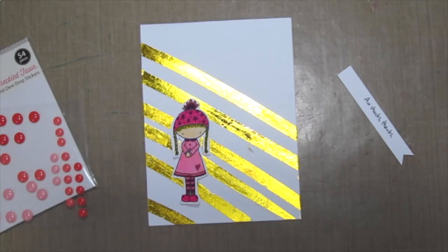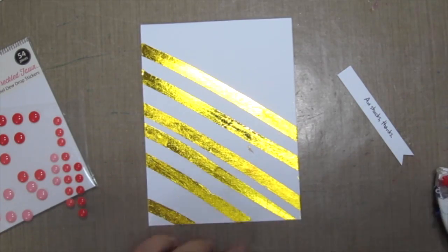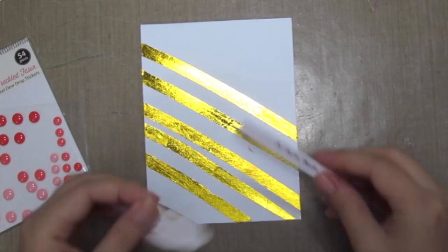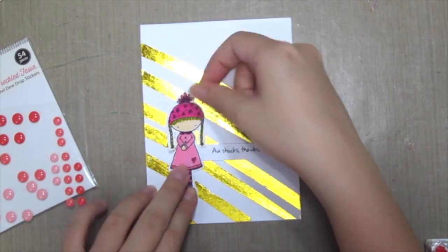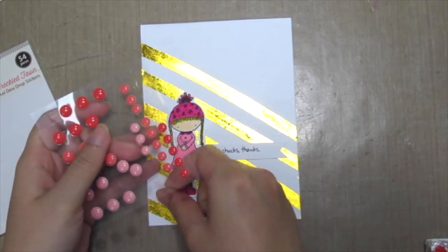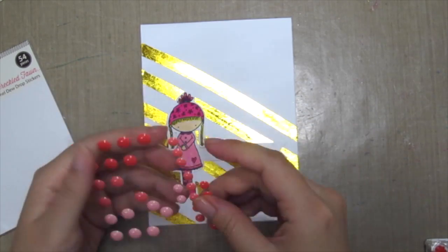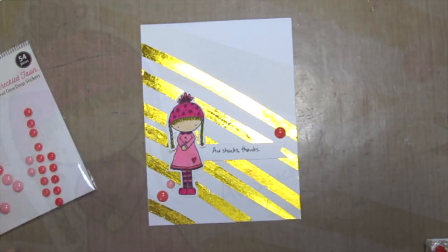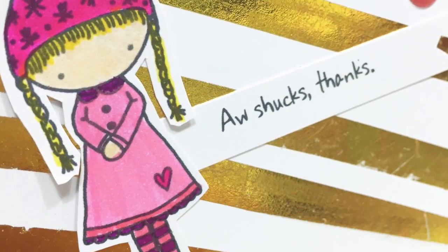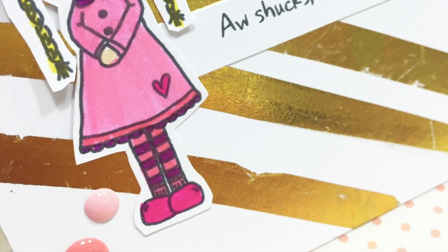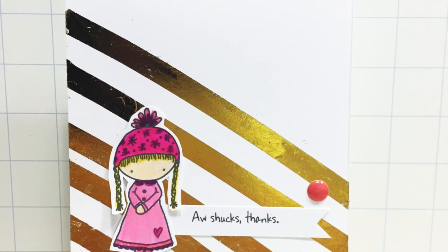Grab your stamp image and your sentiment and adhere it to your card. Add some enamel dots, and there you have it—your glittery, glistening foil card. Thanks for watching the video with me. Hope you've enjoyed this quick and easy technique. Bye!